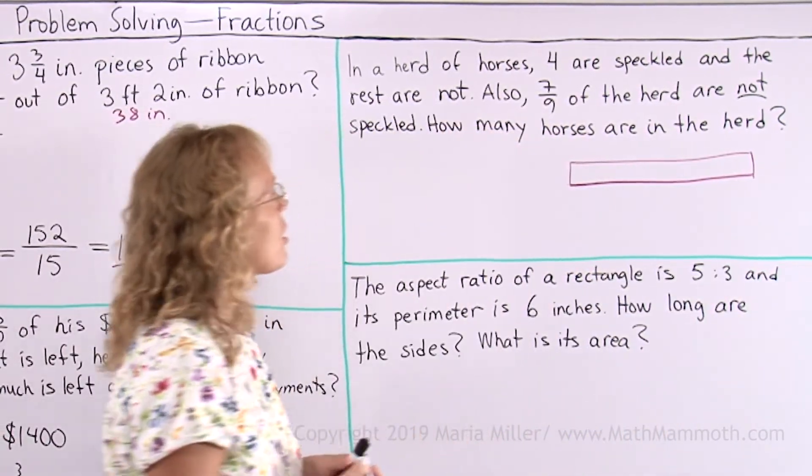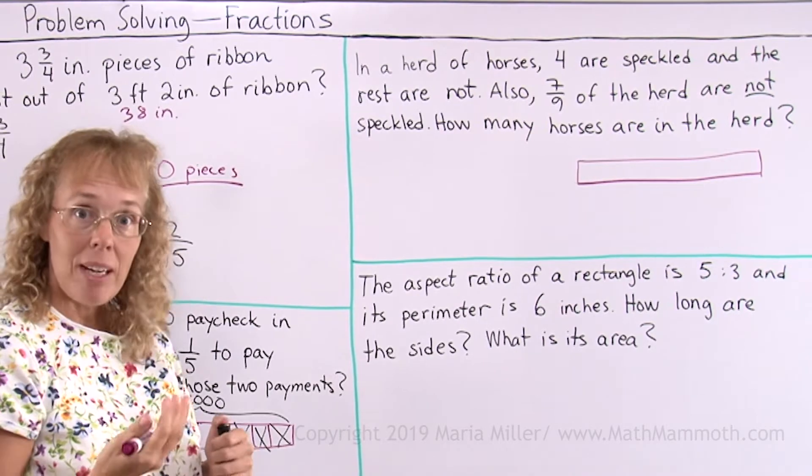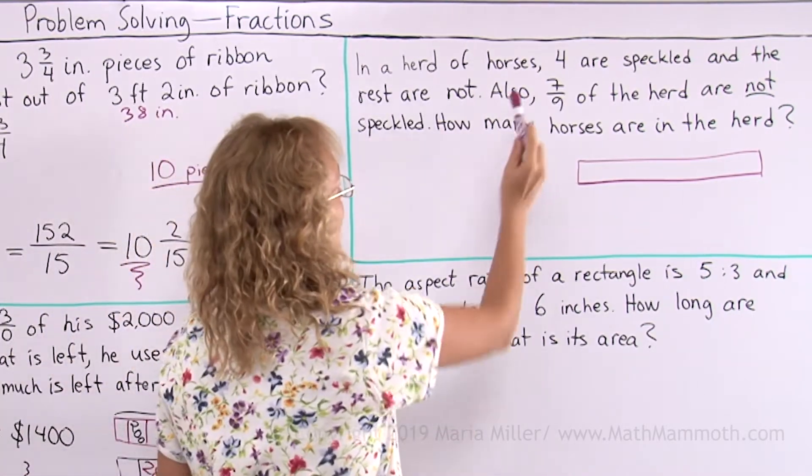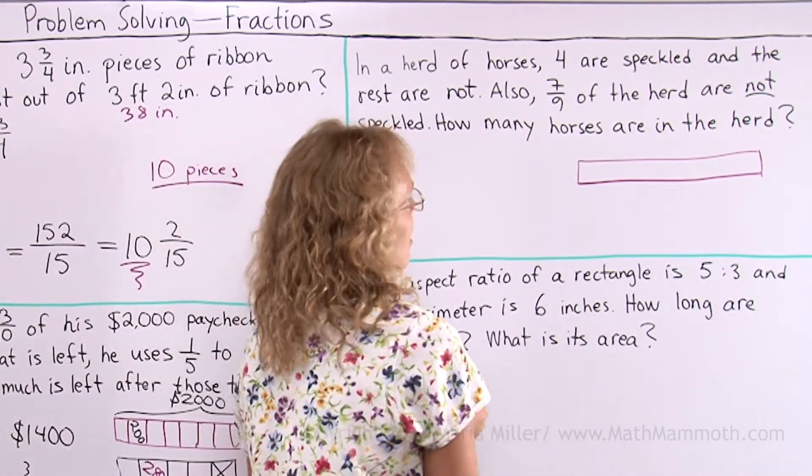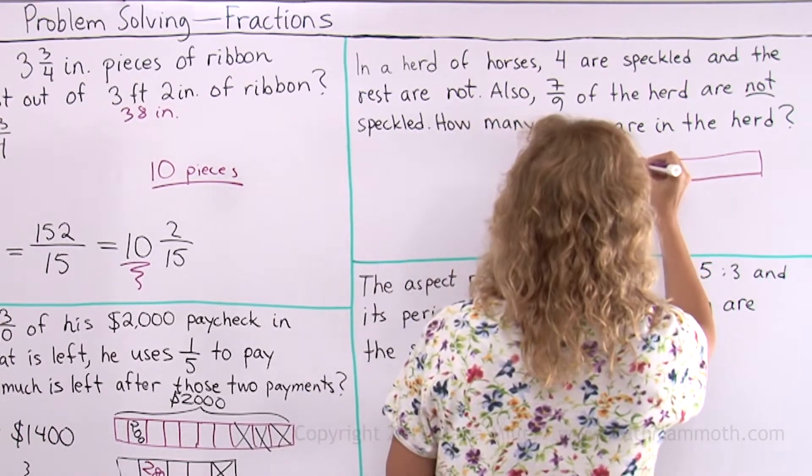This is the whole herd of horses. I'm gonna divide it into parts. How many parts? Well, it tells us 7 ninths of the herd are not speckled, so 9 parts is what I need to make here.